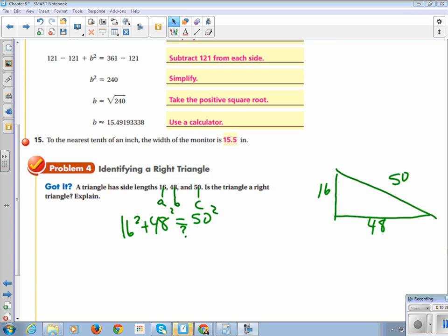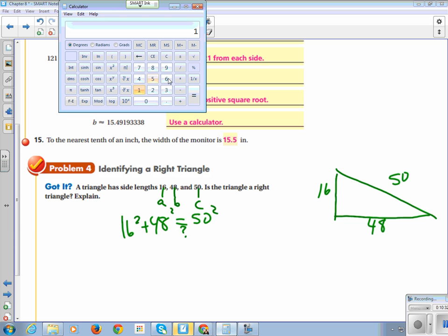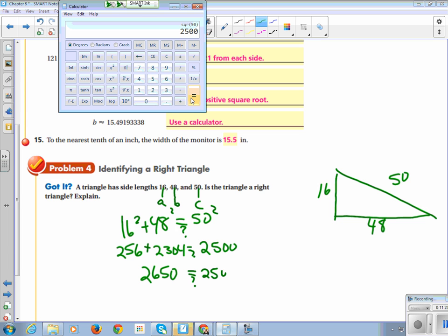This is just a little bit of calculator work. 16 squared is 256. 48 squared is 2304. The two of those added together is 2560, and 50 squared is 2500.